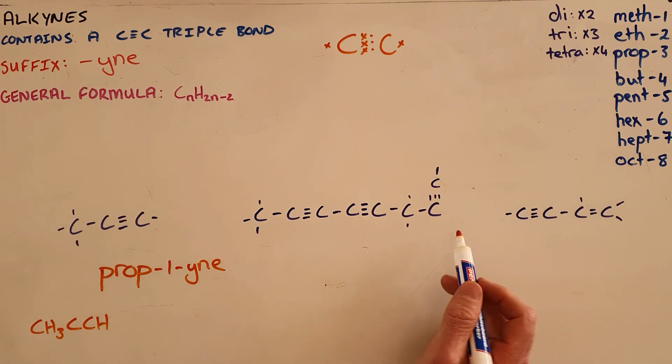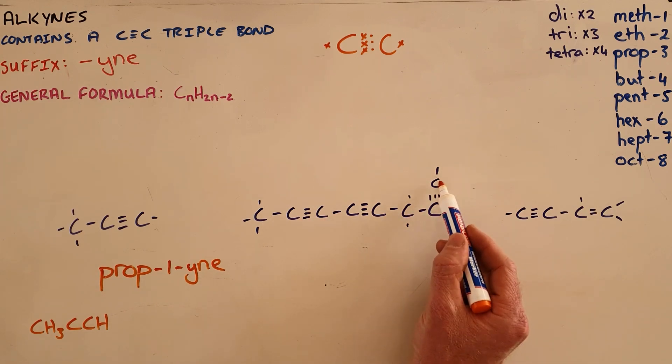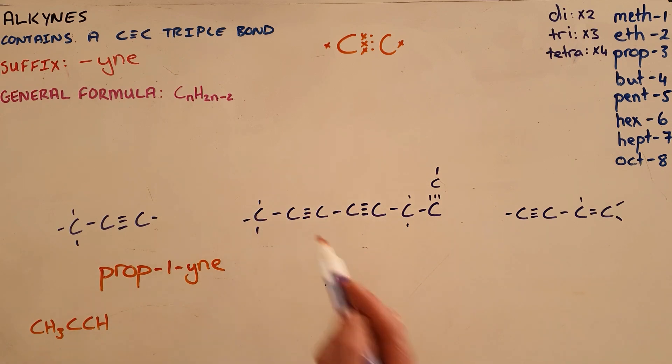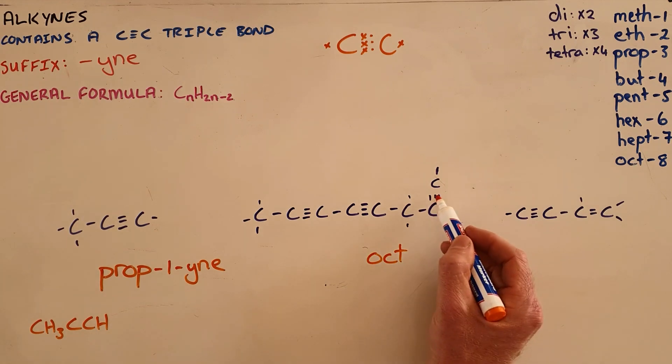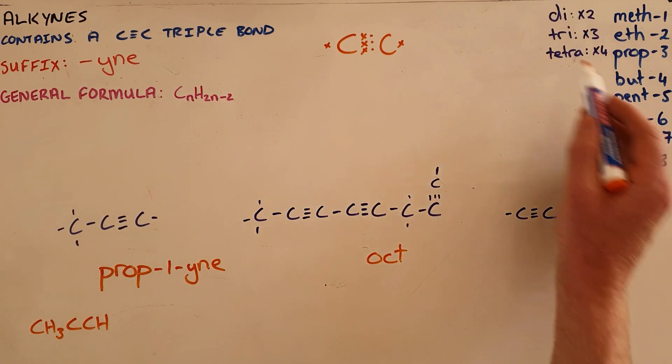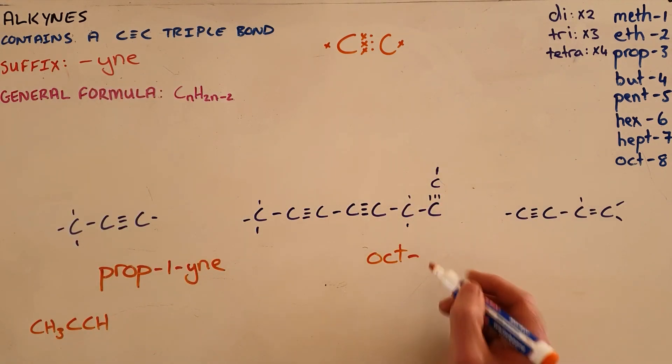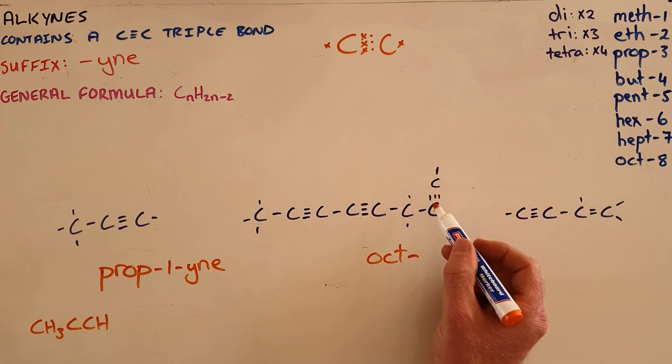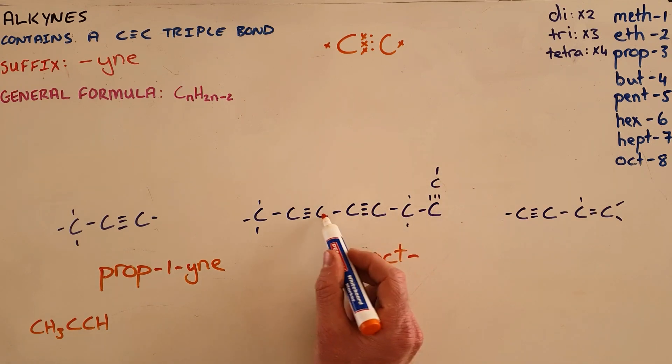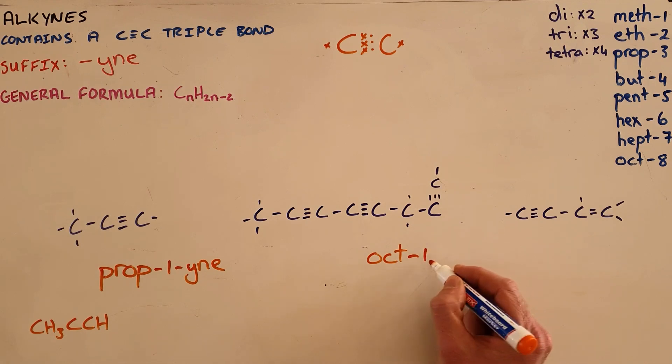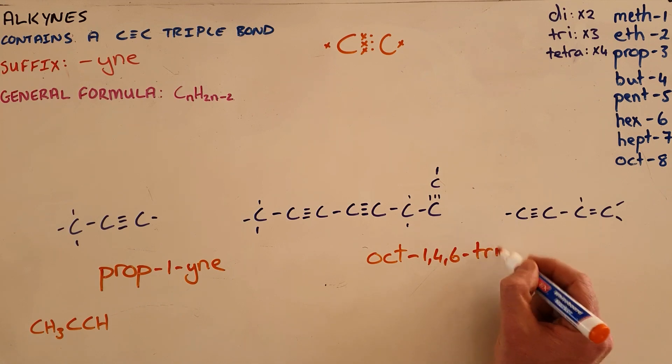The next one we would follow the same pattern where we count the number of carbons in the longest chain, where a bend in the chain does not affect the chain length. So one, two, three, four, five, six, seven, eight. So we know that this gets the prefix oct. We can see that there are three triple bonds present, which means that this is going to be a triyne, and we indicate the position of those three triple bonds by seeing that they are on the first, fourth, and sixth carbon. So we say oct-1,4,6-triyne.